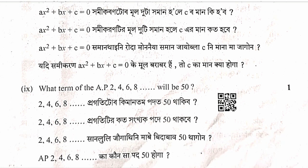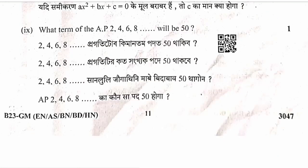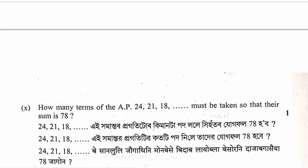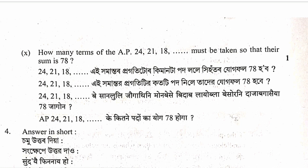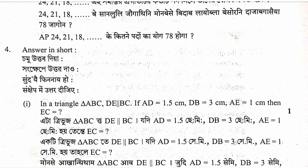Question: What term of the AP will be 50, and how many terms of the AP must be taken so that their sum is 78? Sum S equals 78, a equals 5, d equals 24 minus 21 equals 3. Solving gives the value of n.